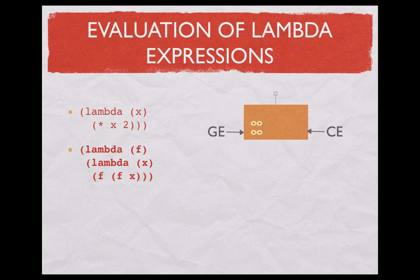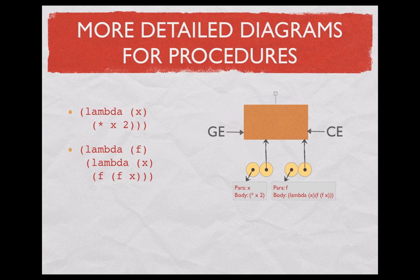Because we like to show more detail about these procedures, we show them outside the frame in which they exist. One of the two circles shows the textual structure of the lambda expression, and the second circle points — has a kind of address — to the environment in which the procedural object exists. The procedure on the right has a body which is itself a lambda expression, but for the time being that is just text and won't create any procedures until that body is executed.